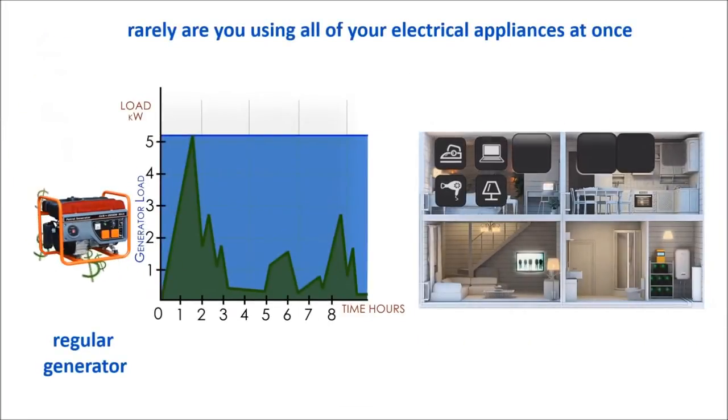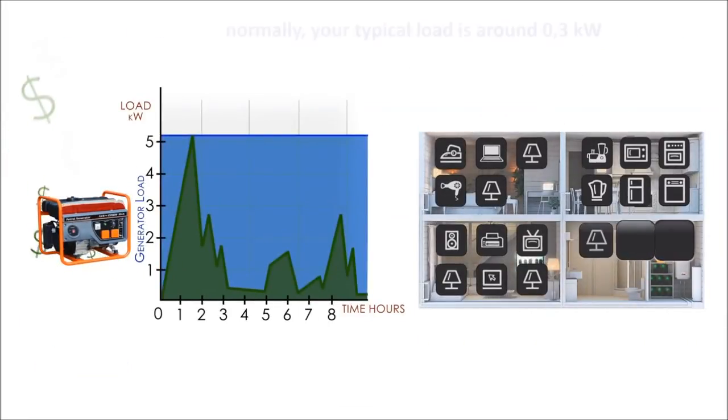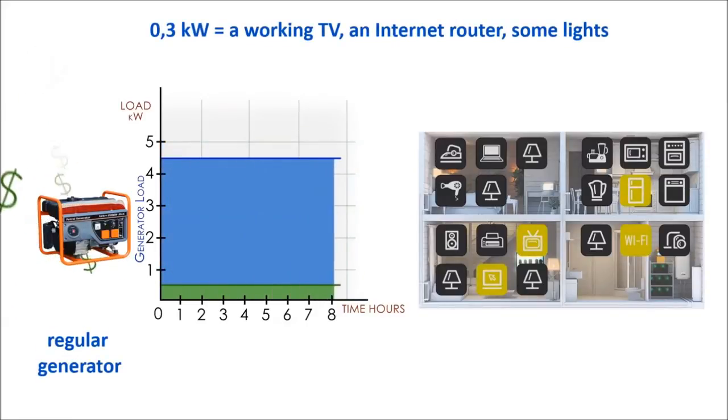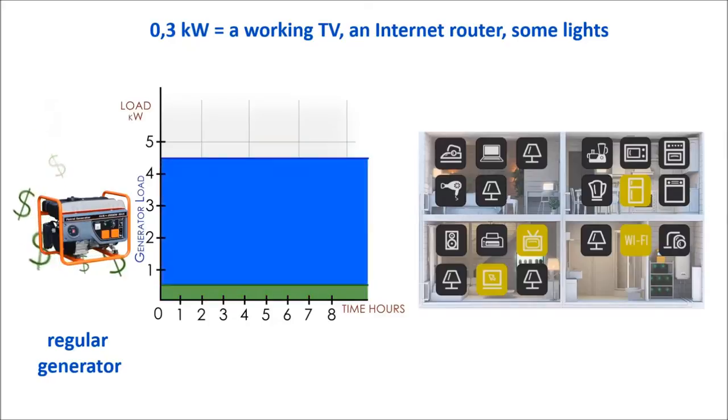Rarely are you using all your devices at once. Normally, your typical load is between 0.1 to 0.3 kilowatts, which is equivalent to a working TV, internet router, and some lights.